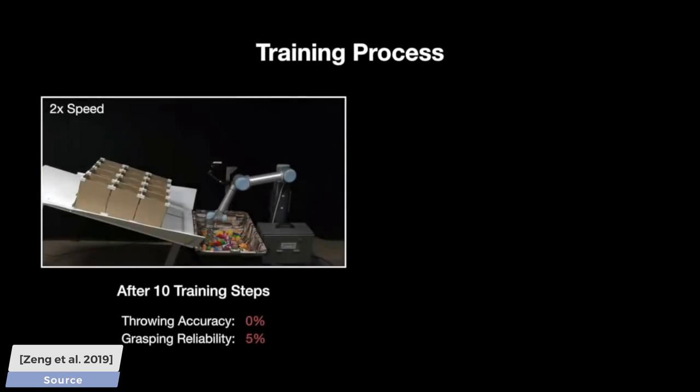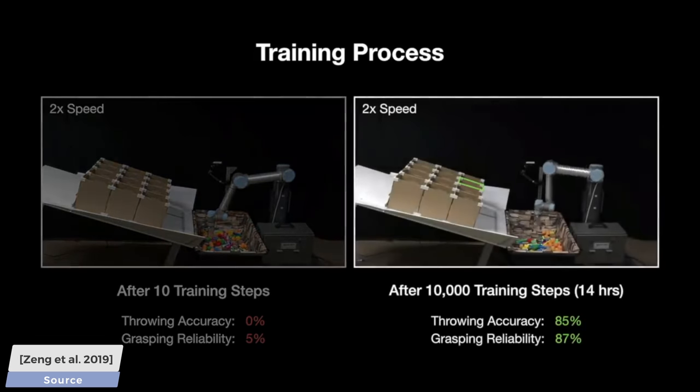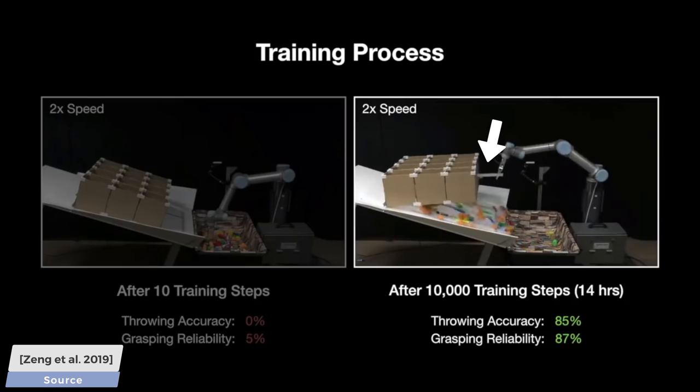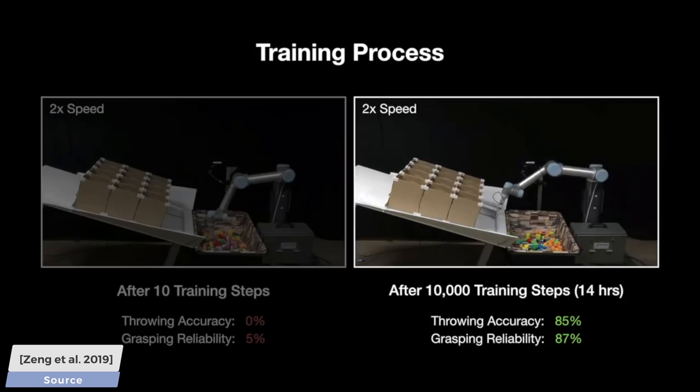As you see here, initially it cannot even practice throwing because its reliability in grasping is quite poor. However, after 14 hours of training, it achieves a remarkable accuracy. And to be able to train for so long, this training table is designed in a way that when running out of objects, it can restart itself without human help. Nice!